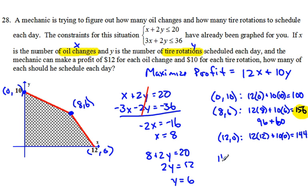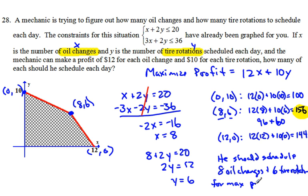I'm going to say he should schedule—let's see, this was going to be 8 and 6, and 8 is X—so 8 oil changes and 6 tire rotations for a max profit of $156. And this is for each day, so $156 per day.